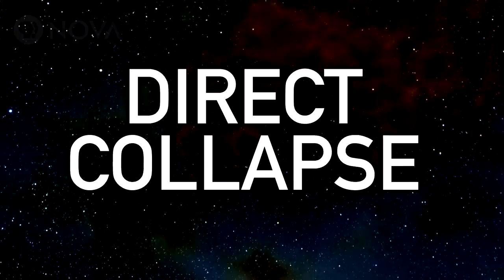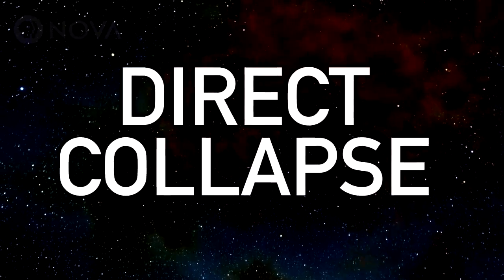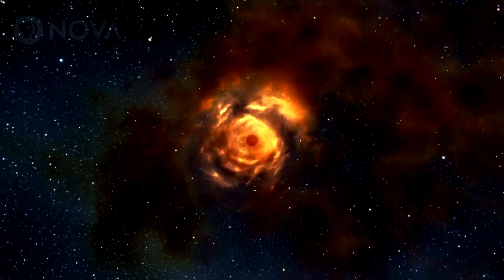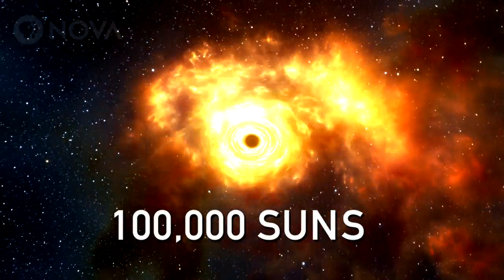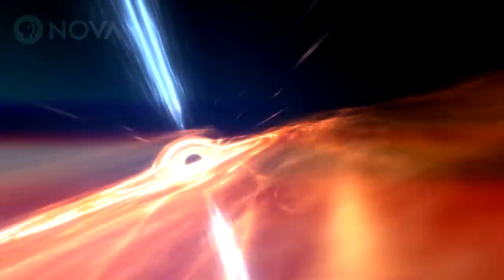Clearly, they have been eating something to grow to that size. One possibility is direct collapse. It skips the cycle of stars. The universe, when it was younger, contained a lot more gas. If you were able to get a cloud of gas that had a mass of 100,000 suns, it collapses under gravity into a black hole in one shot.